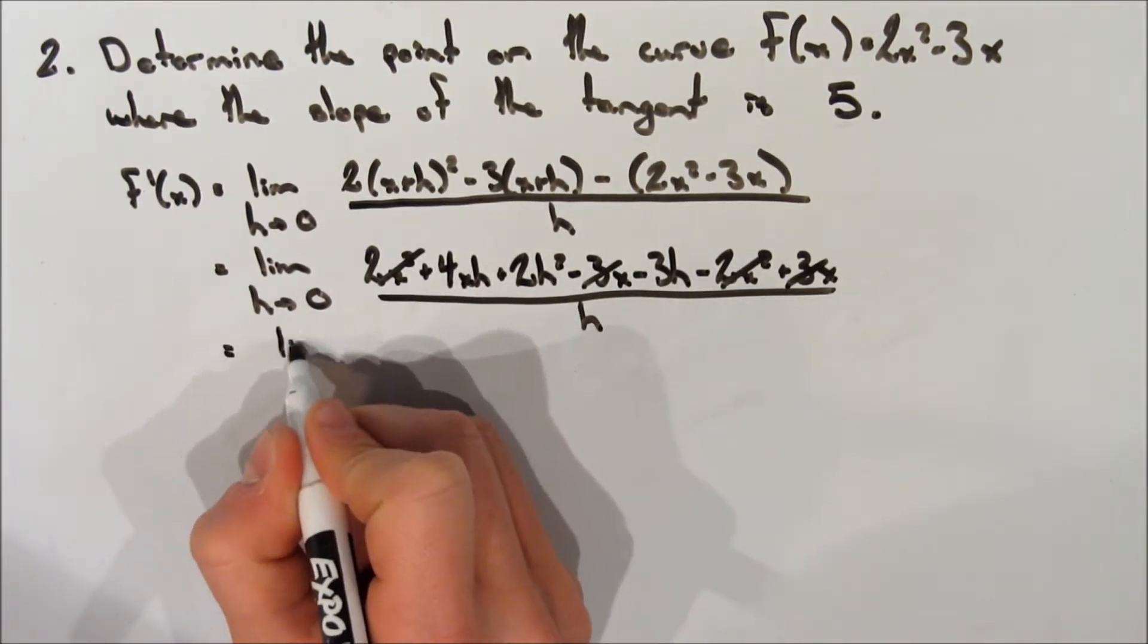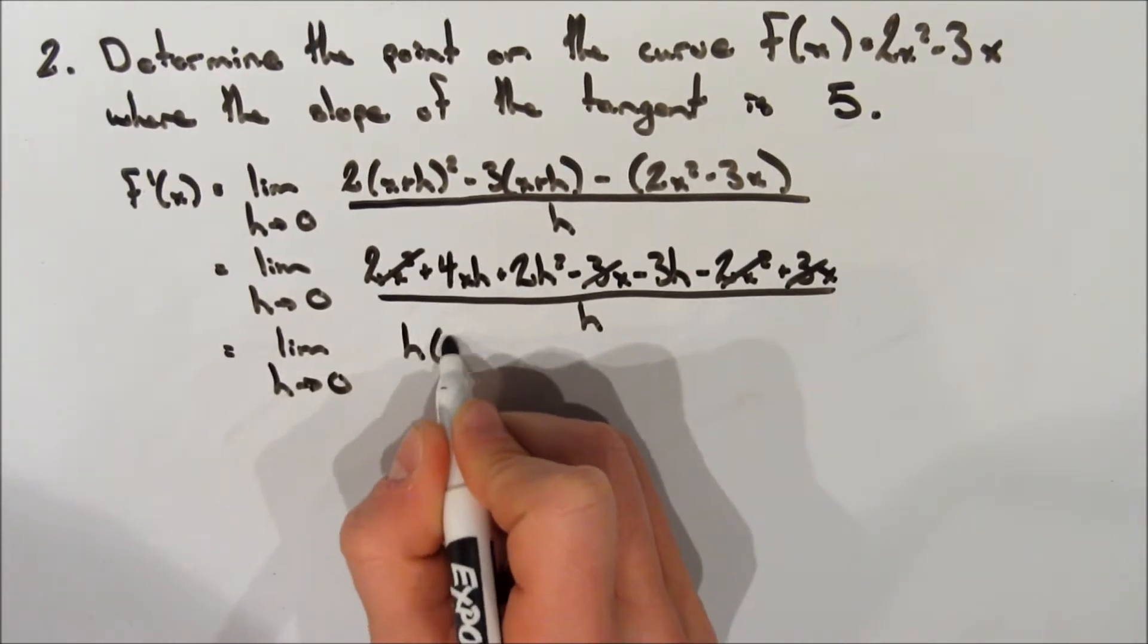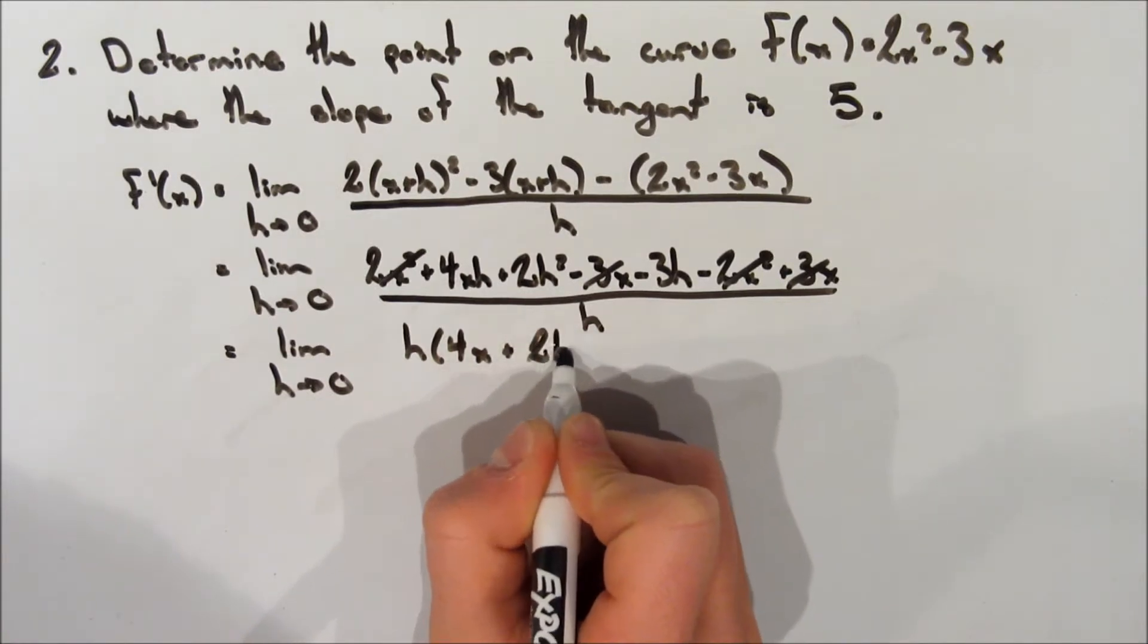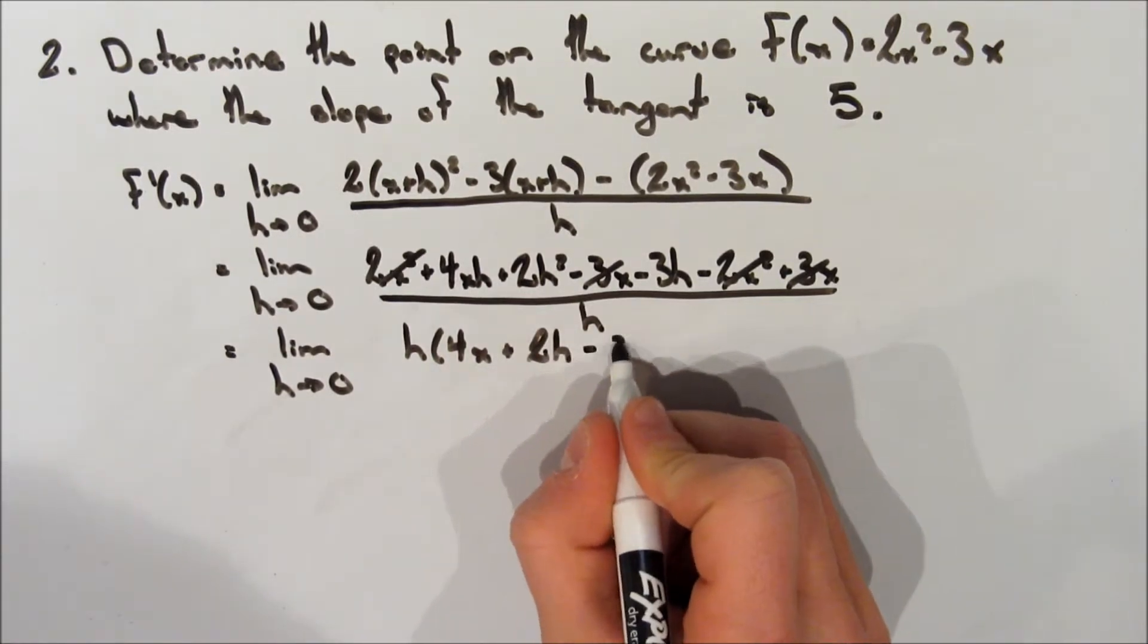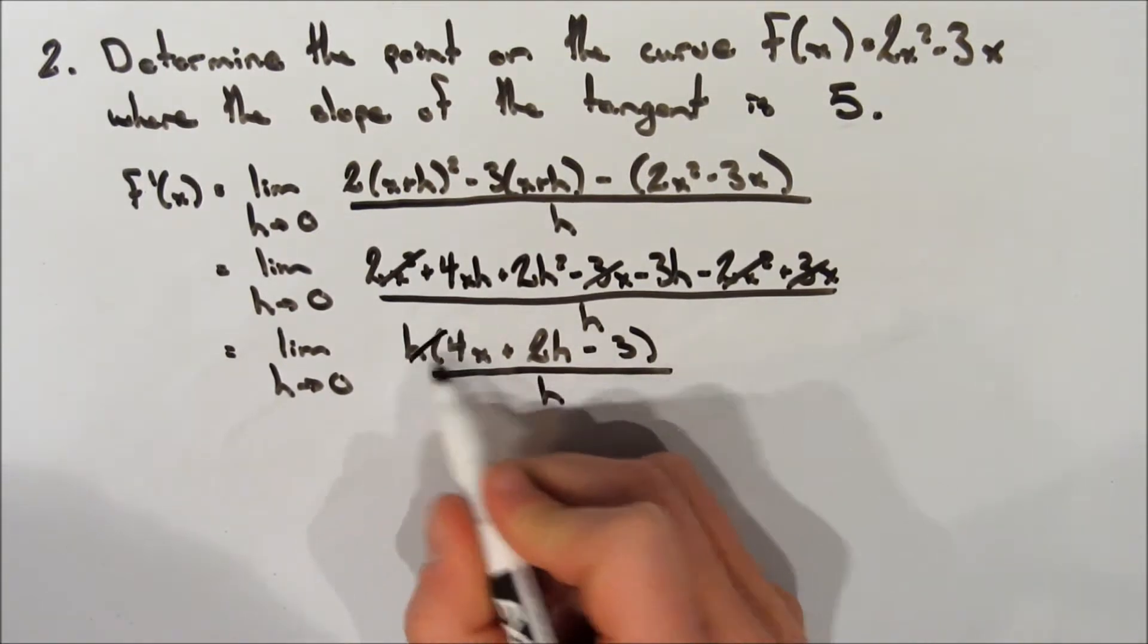And so now, still taking the limit as h approaches 0, and we have a lot of terms with h in it. So let's factor in h. So it's going to be h multiplied by (4x plus 2h minus 3) over h. And we can cancel those h's out.